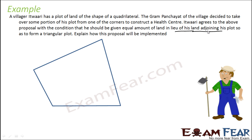What he is saying is he will give some piece of land, but he wants some piece of land somewhere adjoining here, so that his plot becomes a triangle.